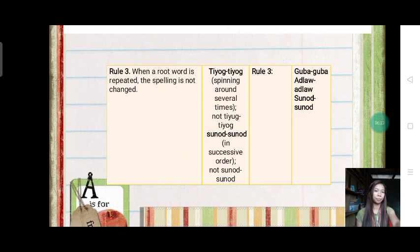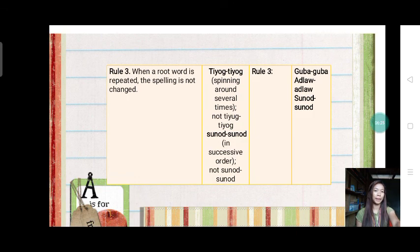So rule number three. When a root word is repeated, the spelling is not changed. Bisan yung uro-otroho ni it word, it spelling, gilalagiyak mababago. Retain the spelling of the word, even the syllables are repeated.